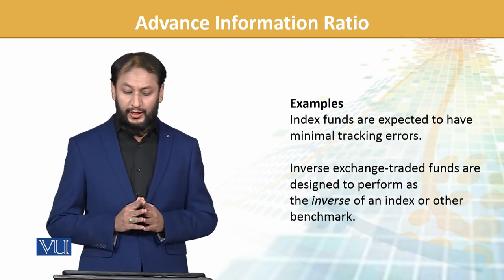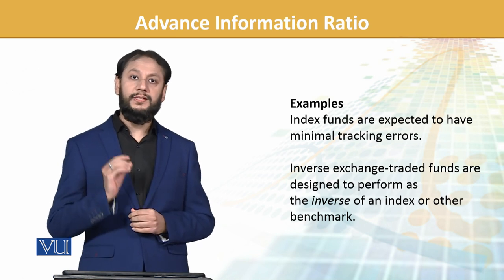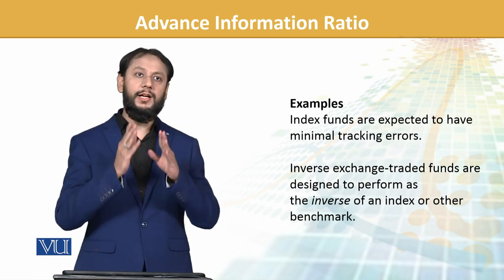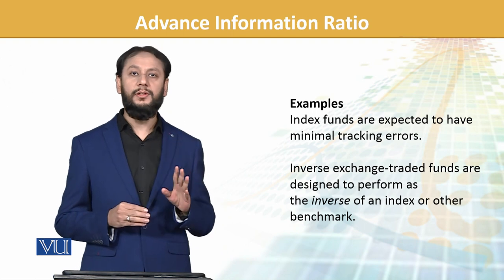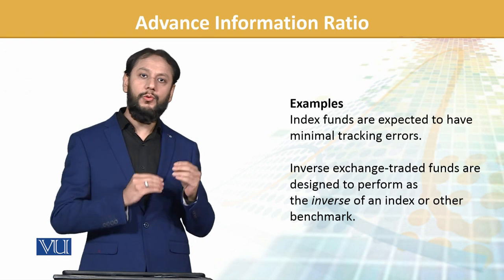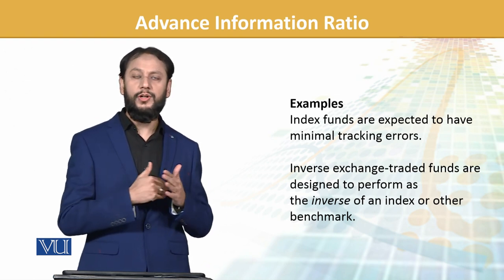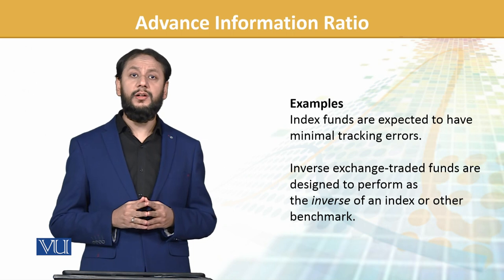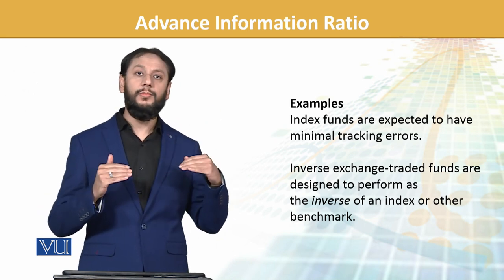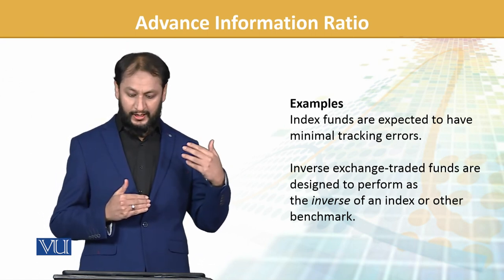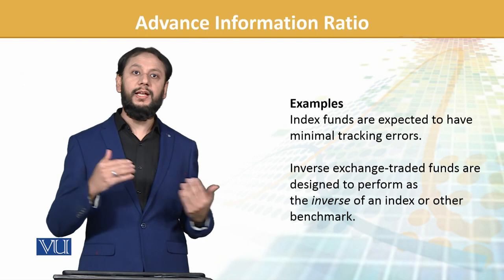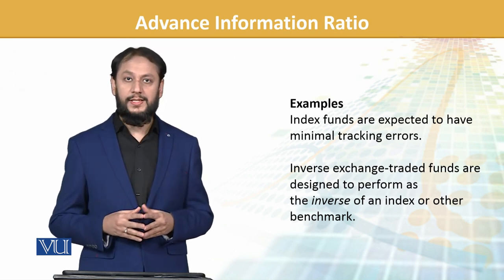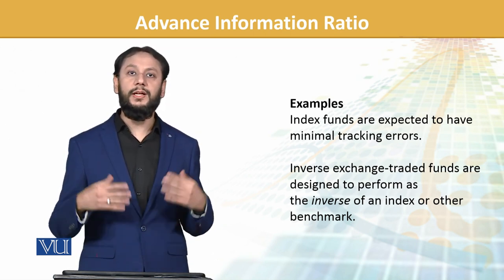For example, index funds are expected to have minimal tracking error. If our goal is simply to track the index, then our tracking error should be minimum — if I have decided to follow the KSE 100, I should fully follow it with minimal gap; timing difference comes in slightly but tracking error should be minimal. Inverse exchange traded funds work oppositely — their dynamics are built so that when the index goes down, they go up. Their linkage with the benchmark works accordingly. Depending on the relationship, all of this is worked out. So information ratio is our tool with which we gauge this.